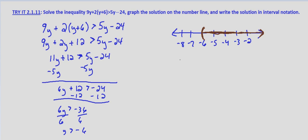And then in interval notation, we're starting at negative 6 and we're going to the right infinitely. So that would be negative 6 with a parenthesis comma infinity.